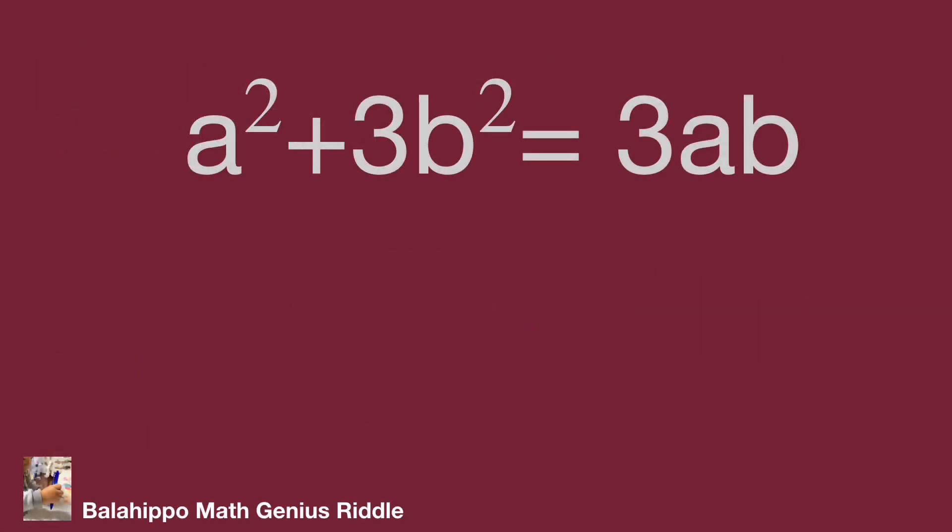To find the value of a and b from the given equation a² + 3b² = 3ab, how can we get two unknowns from this equation? We will share two approaches in this video.